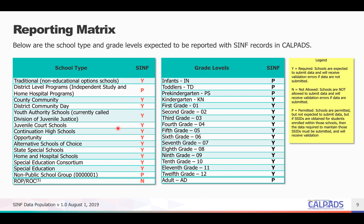In this reporting matrix, on the left side you will see a list of school types and whether they are required to submit the SINF file. On the right, you will see the SINF requirements for different grade levels. Please take a moment to pause and use the legend on the right side of the slide to become familiar with what school types and grade levels the SINF is required for.